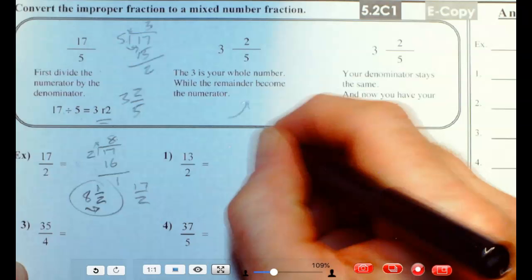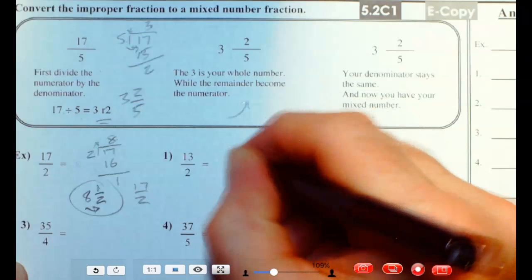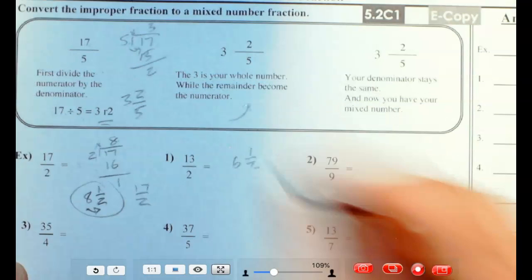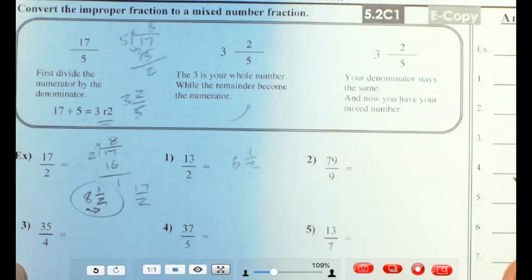13 halves. 13 divided by 2. Well, 12 divided by 2 is 6, and 1 more would make 13. So this would be 6 and 1 half. Let me check my answer. 6 times 2 is 12. Plus 1 is 13 halves. Yes, that works.